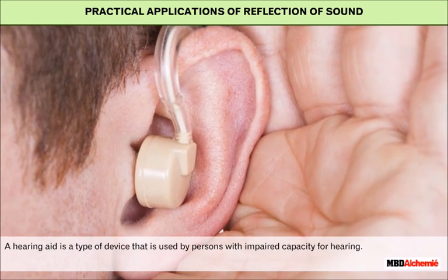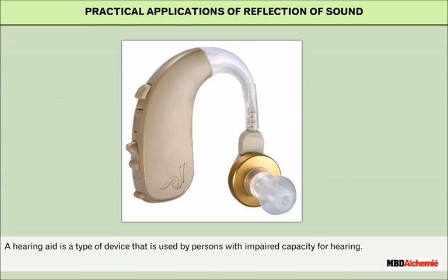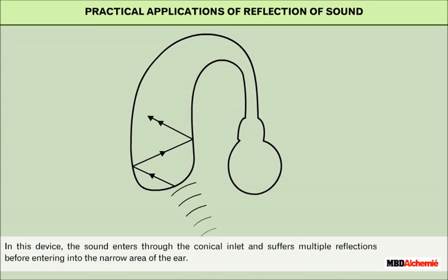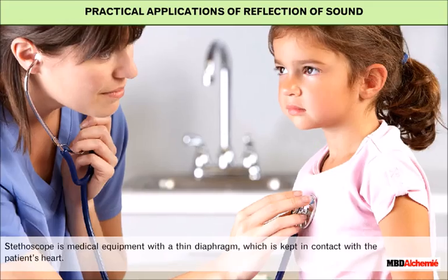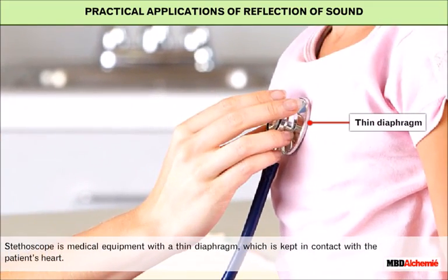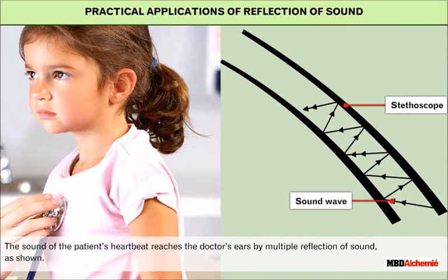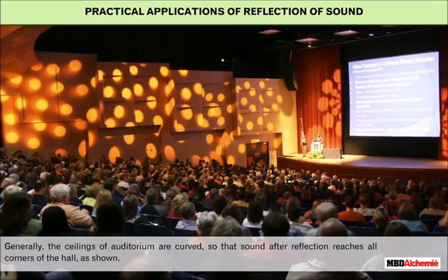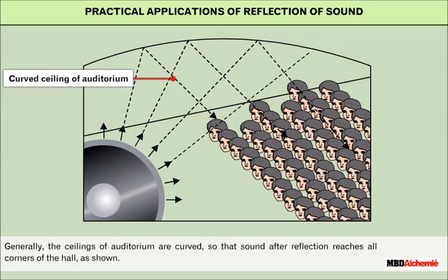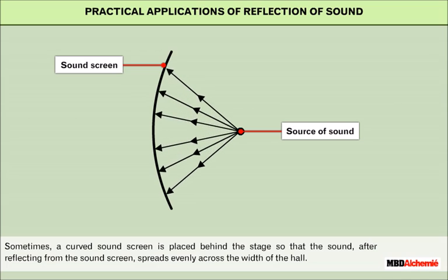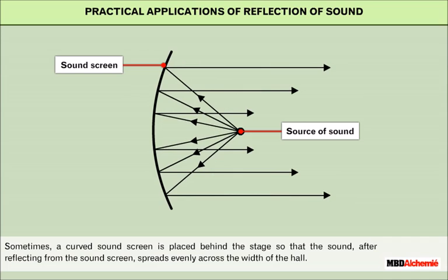A hearing aid is a device used by persons with impaired capacity for hearing. Sound enters through the conical inlet and suffers multiple reflections before entering into the narrow area of the ear, helping to increase the amplitude of the sound. A stethoscope is medical equipment with a thin diaphragm which is kept in contact with the patient's heart. The sound of the patient's heartbeat reaches the doctor's ears by multiple reflection of sound. Generally, the ceilings of auditoriums are curved so that sound after reflection reaches all corners of the hall. Sometimes, a curved sound screen is placed behind the stage so that the sound, after reflecting from the screen, spreads evenly across the width of the hall.